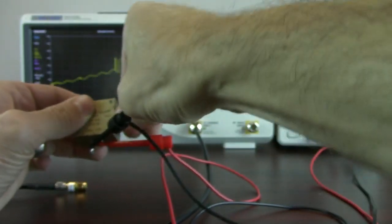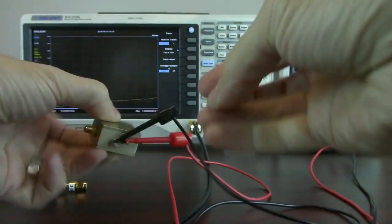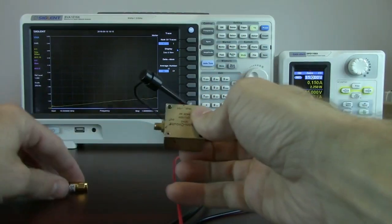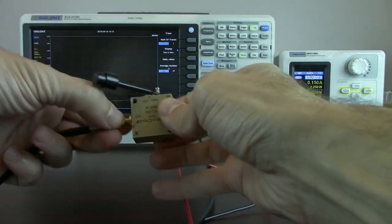And take that termination and I'm going to just flip it around to the input. And now we'll measure the VSWR of the output.